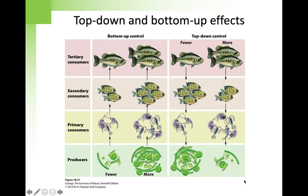Payne suspected the urchins were keeping the kelp from growing, and said to himself, that's my next round of experiments. Payne removed all the urchins by hand from some pools and left nearby pools untouched. Again the results were dramatic — in the pools where he removed urchins, the kelp started growing almost immediately.